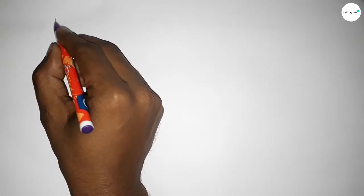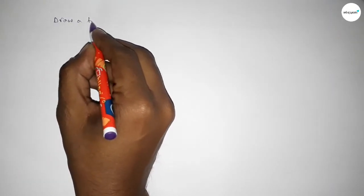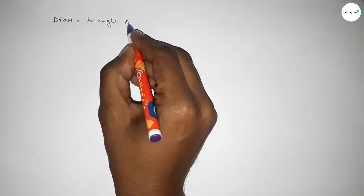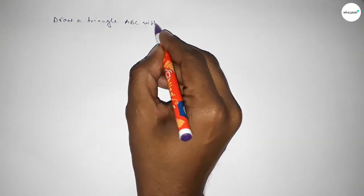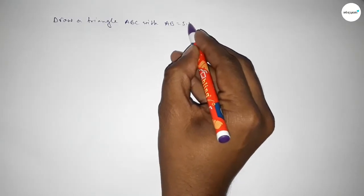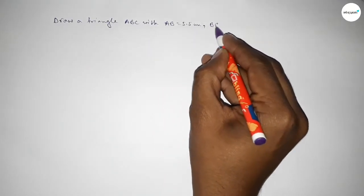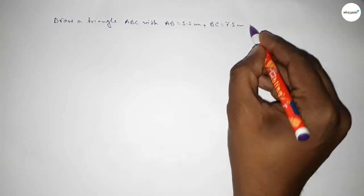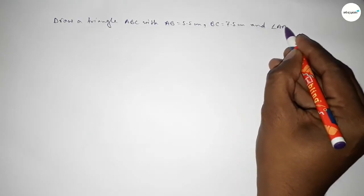Hi everyone, welcome to SI Share Classes. Today in this video we have to draw a triangle ABC with AB equal to 5.5 centimeters, BC equal to 7.5 centimeters, and angle ABC equal to 60 degrees. So let's start the video.